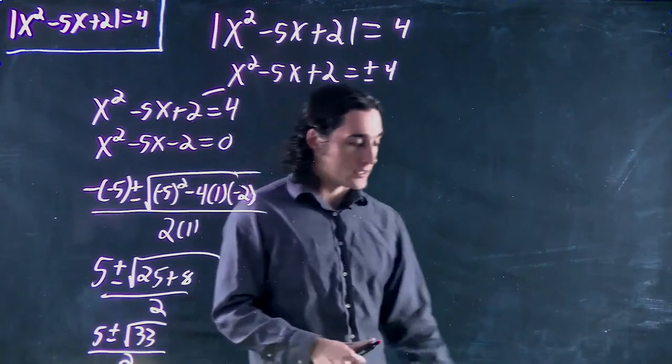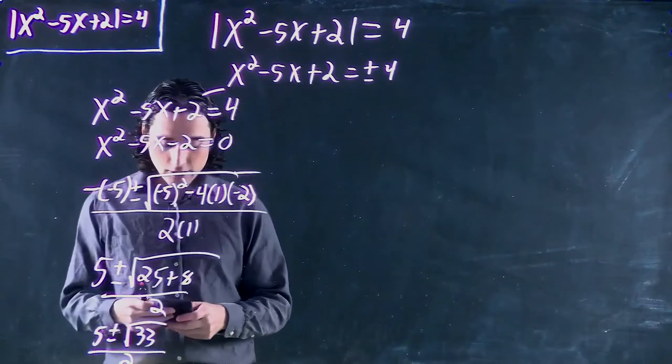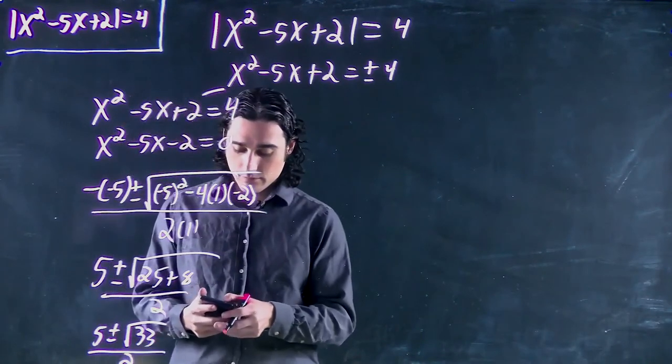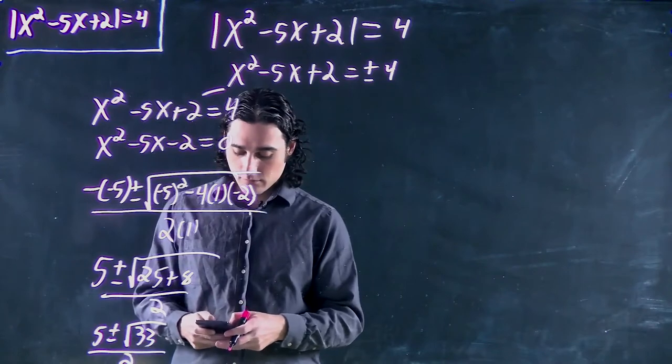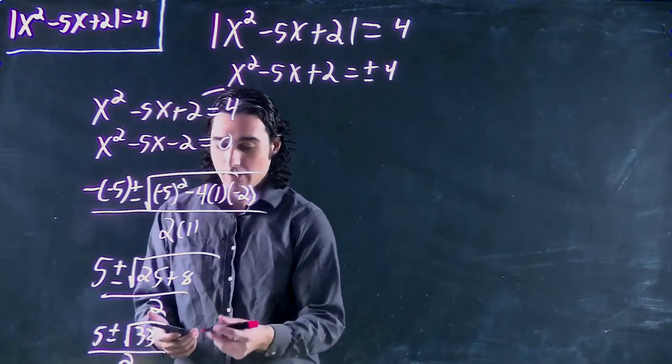And we go to our trusty calculator. Find that the square root of 33 is 5.74. Let's get that back again. There we go.